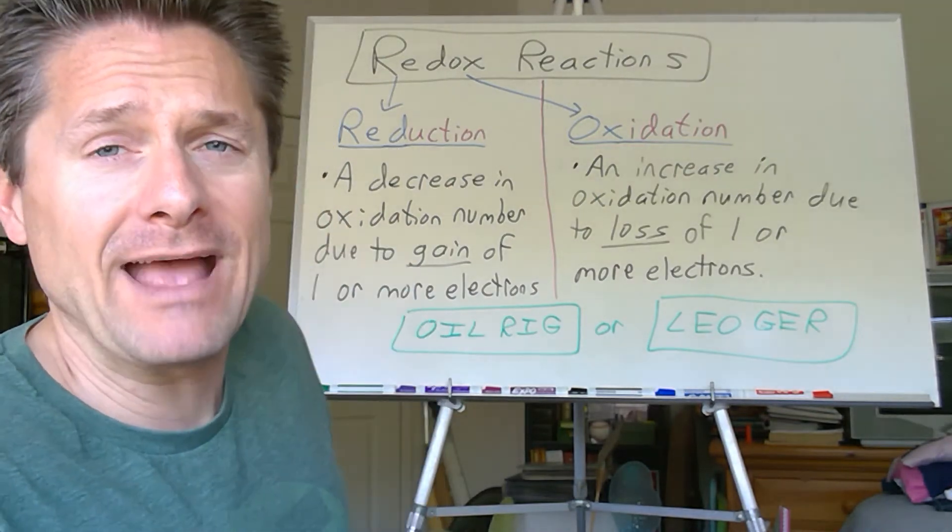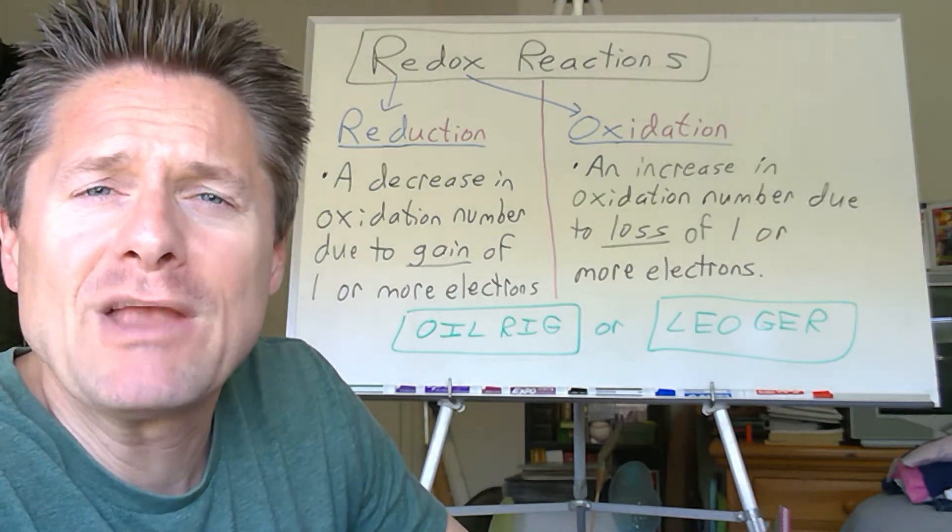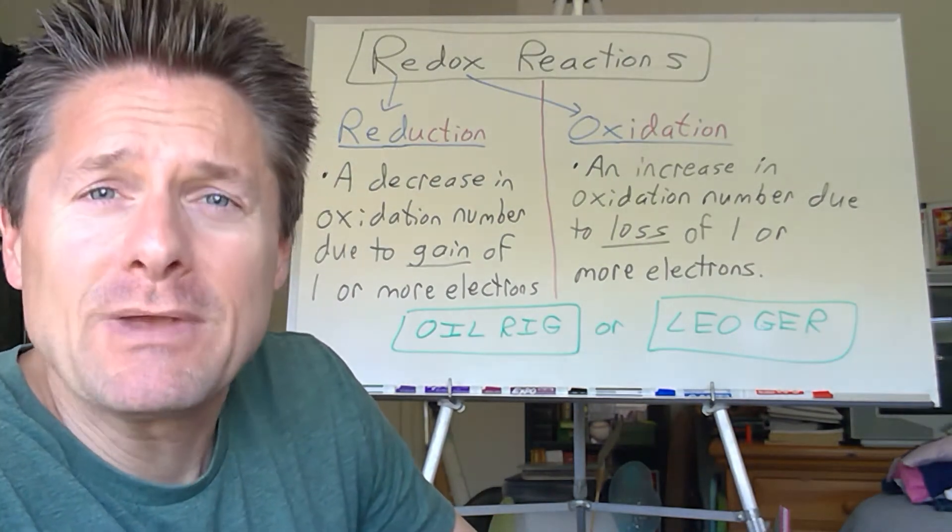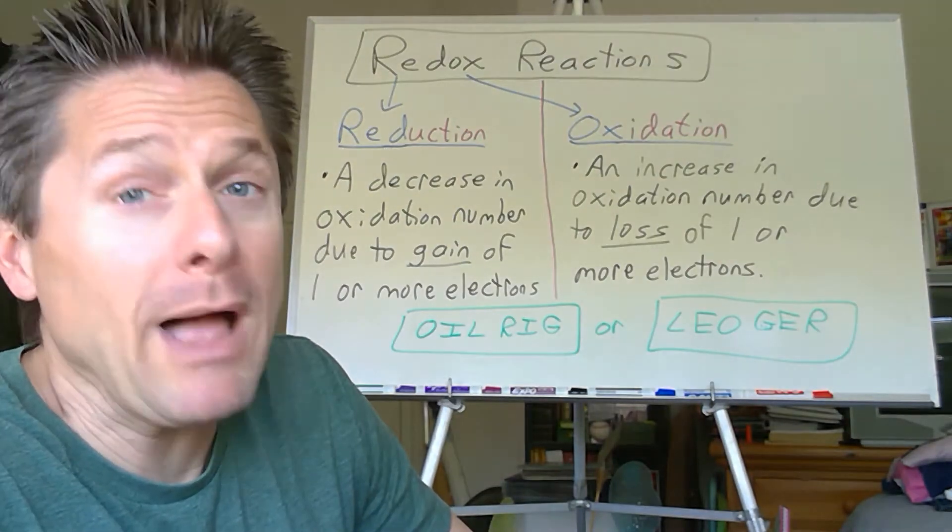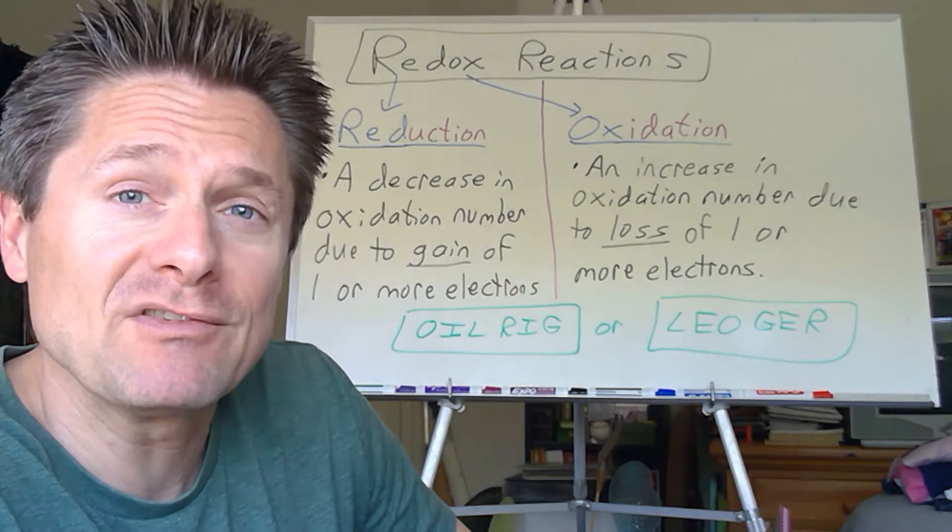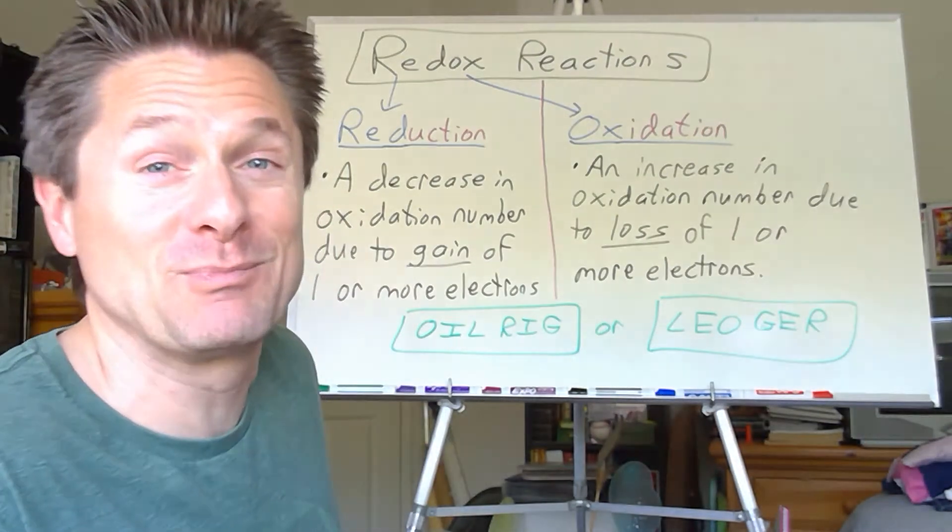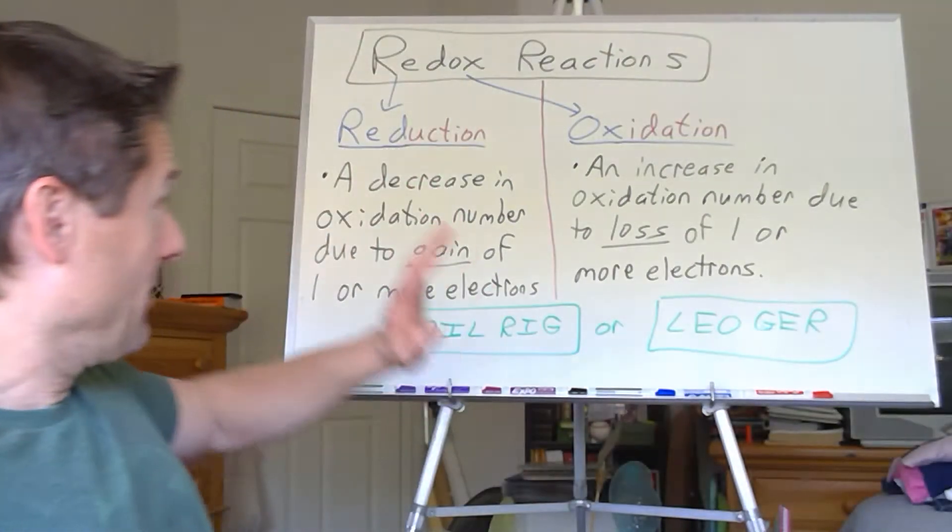We'll find out with acid-base reactions, it's pretty easy to predict what products you're going to get and balance those equations. For redox reactions, not so easy to predict your product. Sometimes impossible at the level we're at. And balancing some of them, especially if they're in aqueous solution, good luck with that! We're going to need some special rules for that.